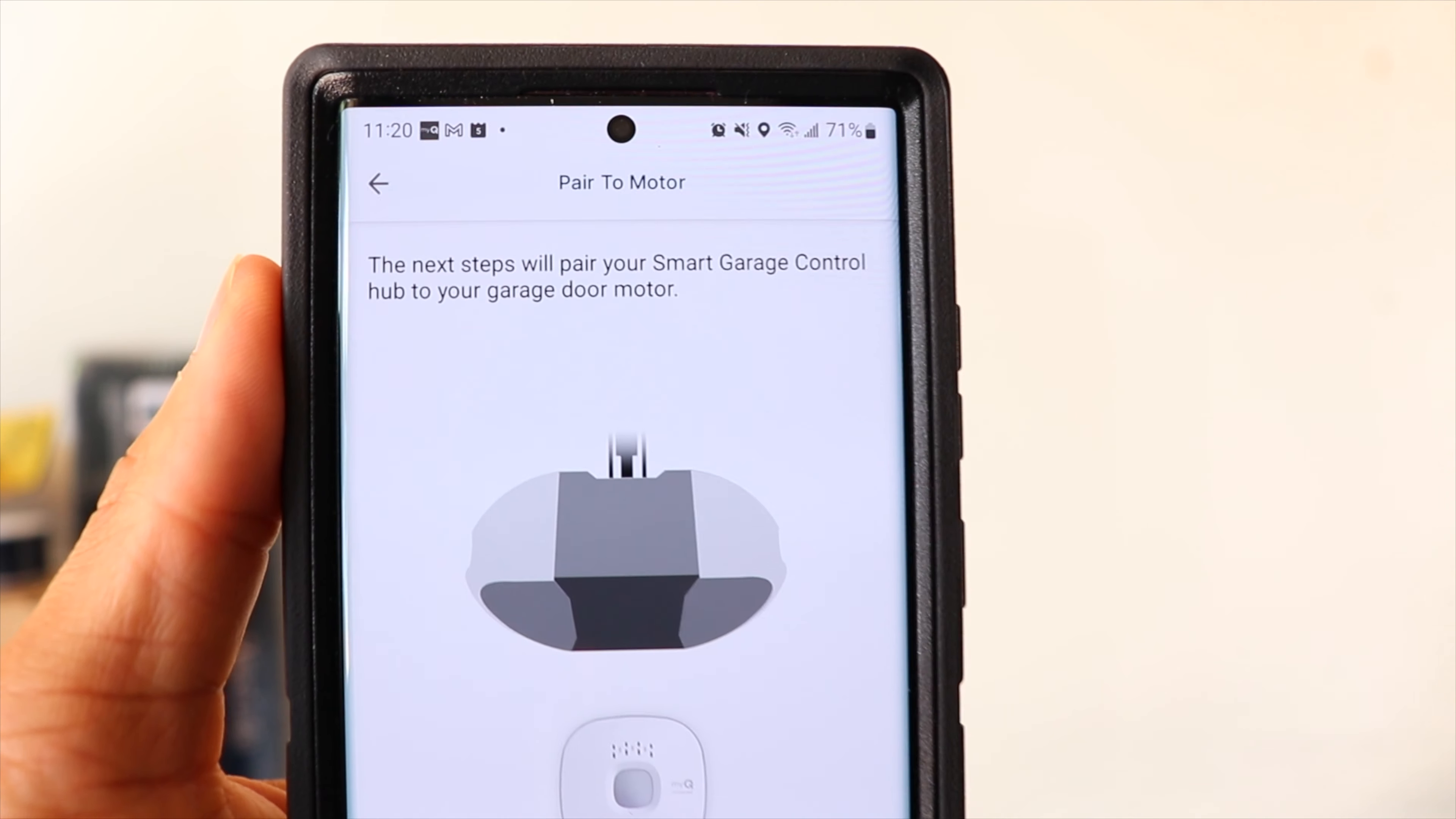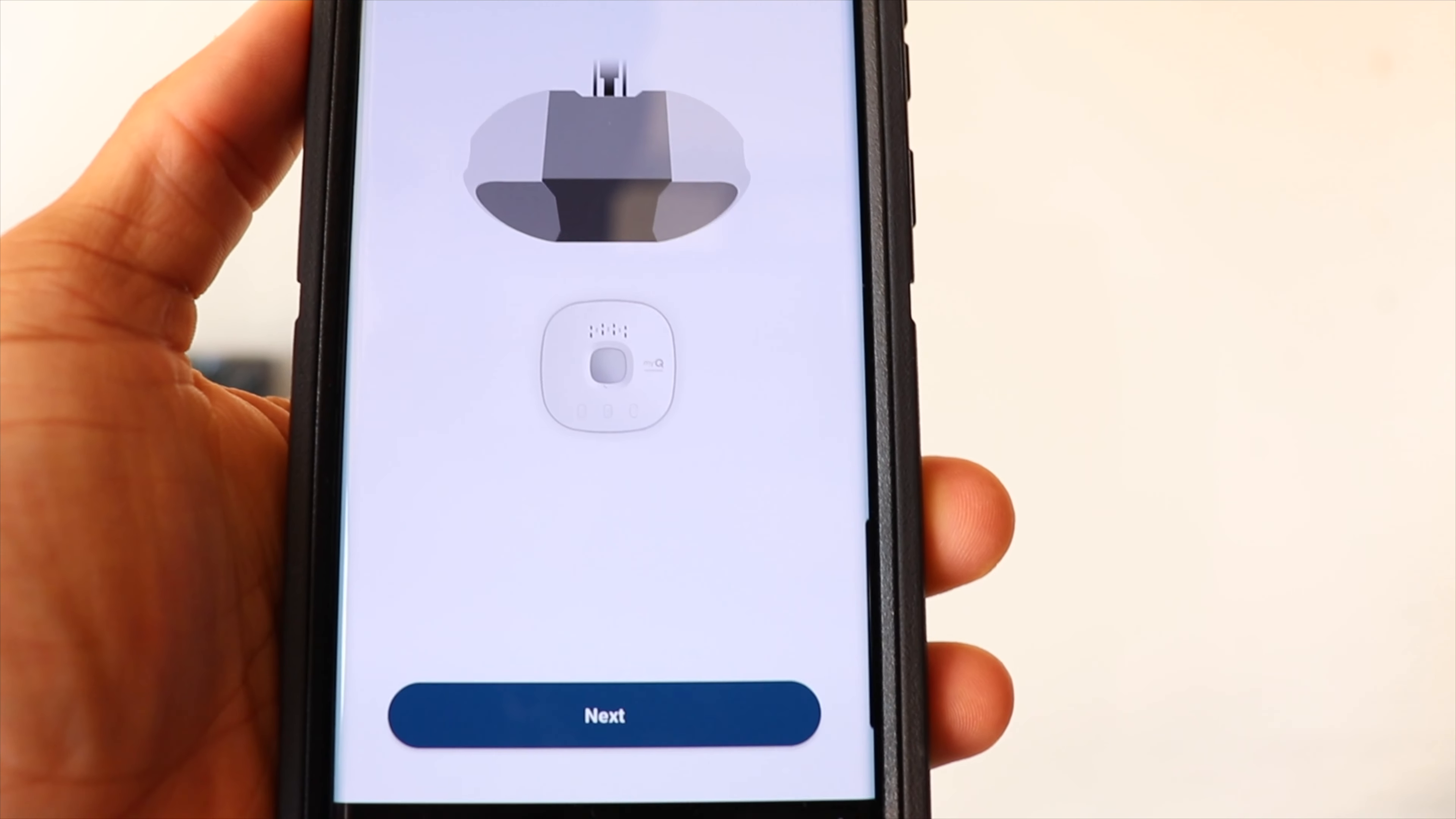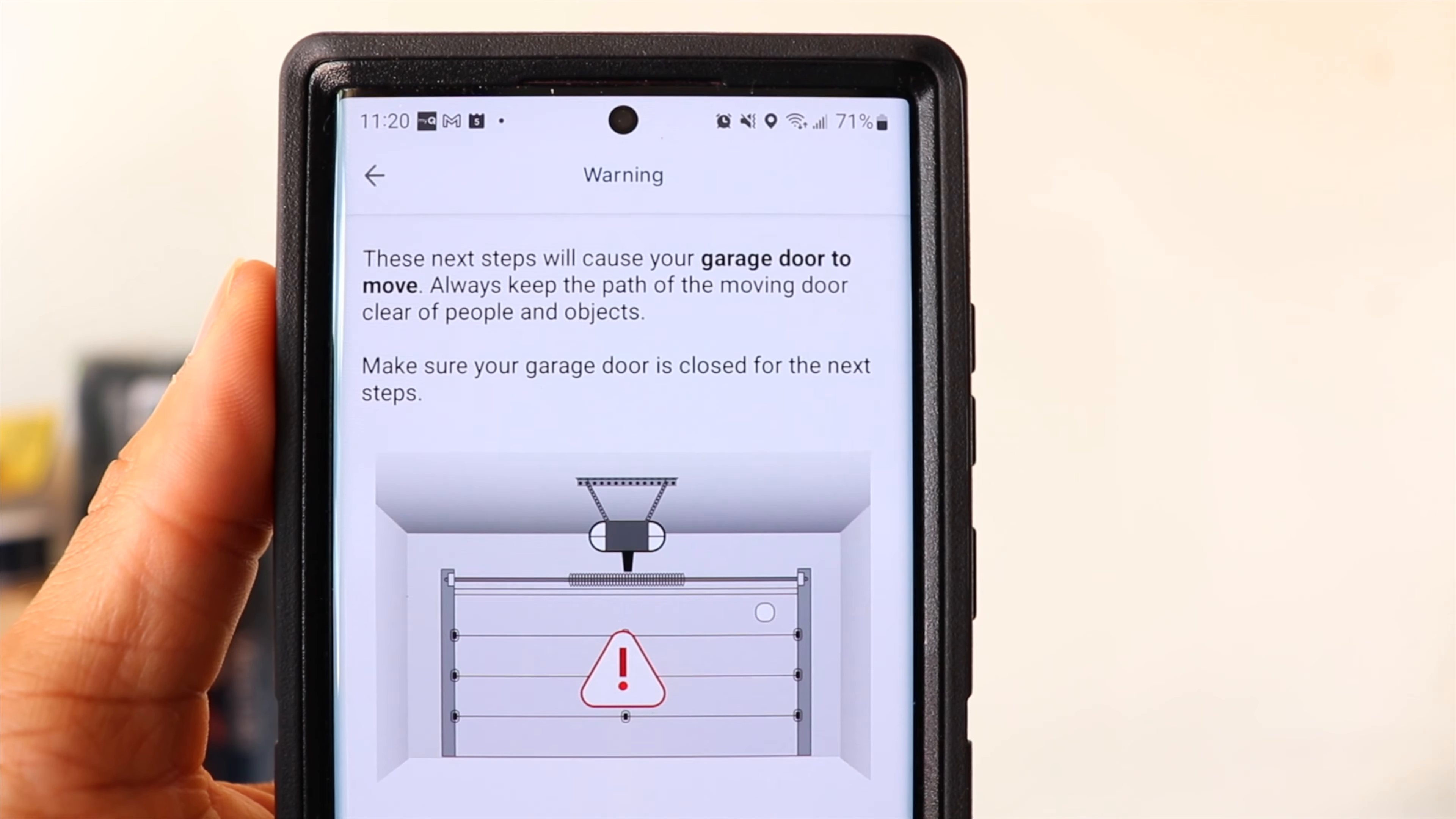After that, we're going to connect our control hub to our actual garage door opener. This step is going to cause the garage door to actually move. So you want to make sure there's no people or objects in the way.